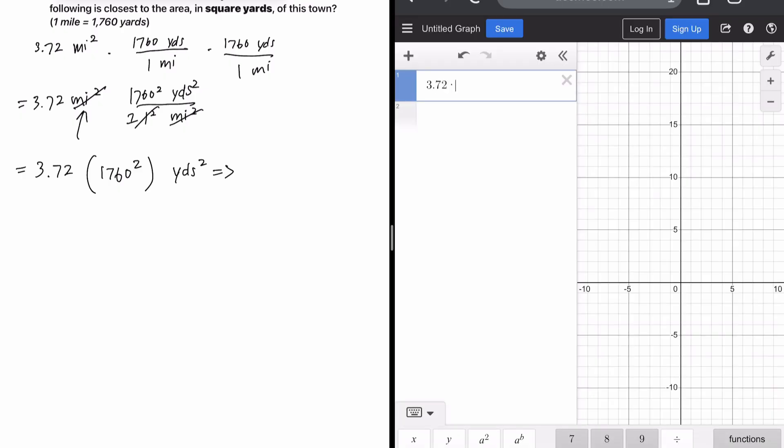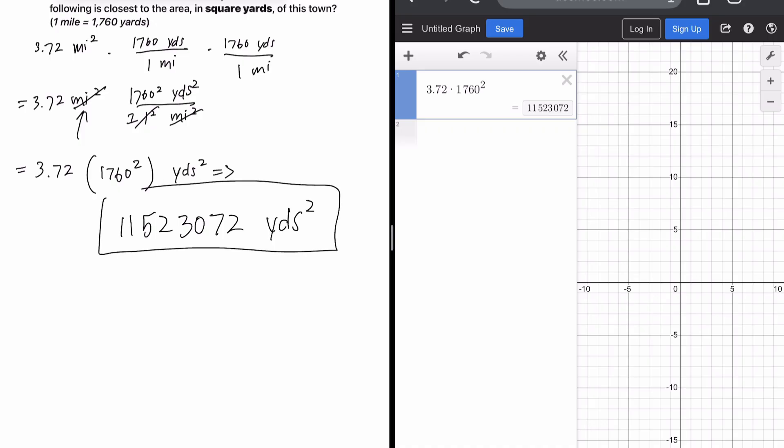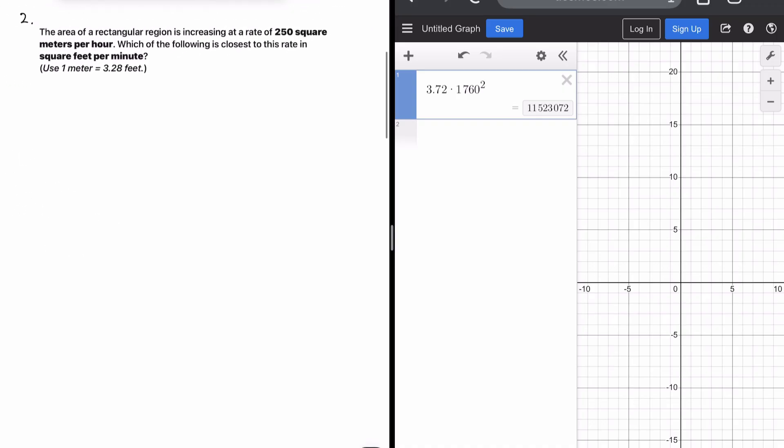3.72 times 1760 squared. And we get this huge number of 11,523,072. 11,523,072 yards squared. That's our answer. Okay.